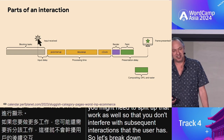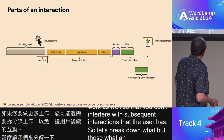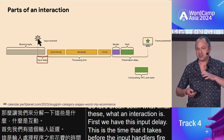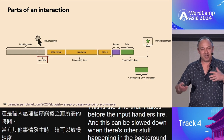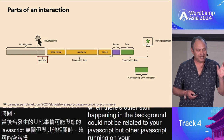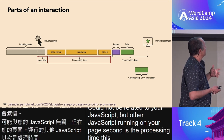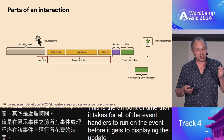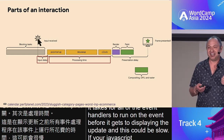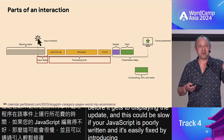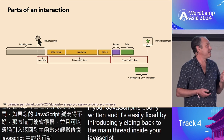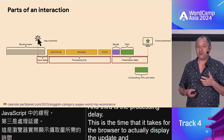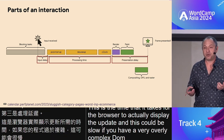Let's break down what an interaction is. First, we have the input delay — the time it takes before the input handlers fire. This can be slowed down when there's other stuff happening in the background, not necessarily related to your JavaScript, but other JavaScript running on your page. Second is the processing time — the amount of time it takes for all of the event handlers to run before it gets to displaying the update. This could be slow if your JavaScript is poorly written, and it's easily fixed by introducing yielding back to the main thread. Third is the presentation delay — the time it takes for the browser to actually display the update. This could be slow if you have an overly complex DOM or CSS, especially on a low-powered device.